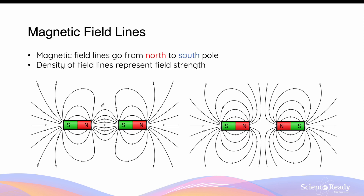When two or more magnetic fields are placed near each other, the direction of field lines depends on the relative position of their north and south poles. Opposite poles — north and south — produce an attractive force, and the field lines are continuous between them, running from the north pole toward the south pole of the other magnet. Two like poles — two north or two south poles — produce a repulsive force, and field lines are not continuous; they repel from one another. In both cases, the density of field lines still represents field strength — closer lines mean a stronger field, and further-apart lines indicate a weaker field.